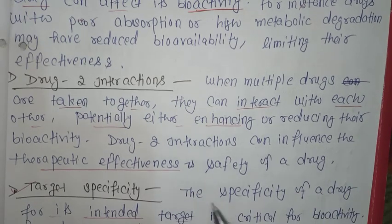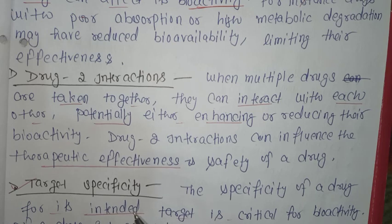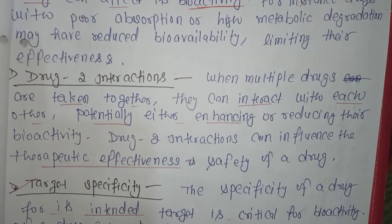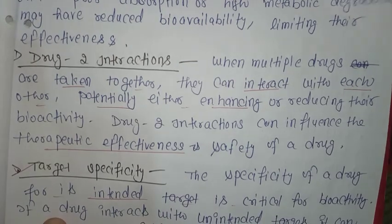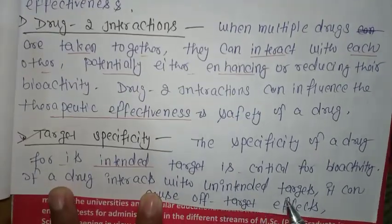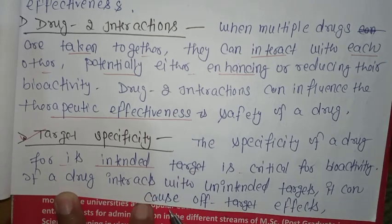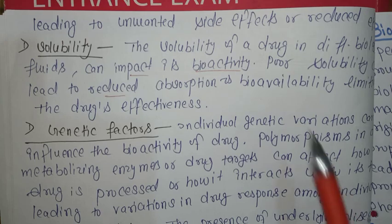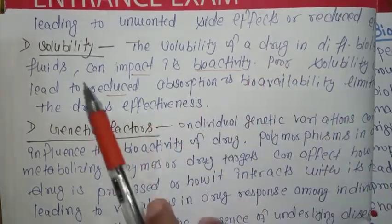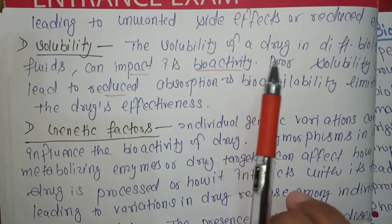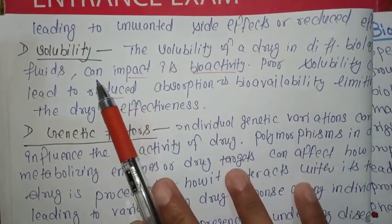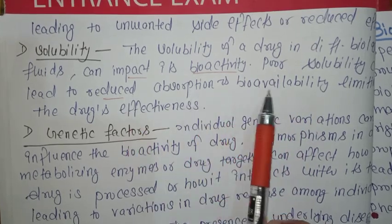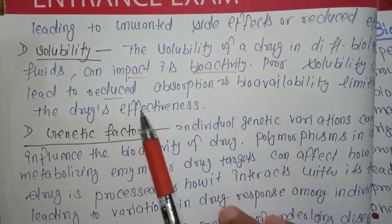Target specificity is crucial for bio-activity. If a drug interacts with an unintended target, it can cause off-target effects, leading to unwanted side effects and reduced efficacy. Additionally, solubility of a drug in different biological fluids can impact its bio-activity, as poor solubility can lead to reduced absorption and bioavailability, limiting drug effectiveness.